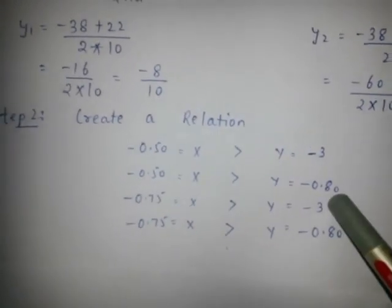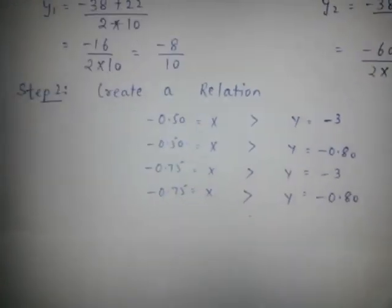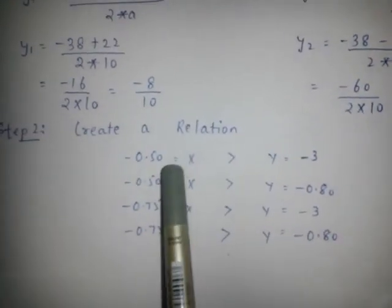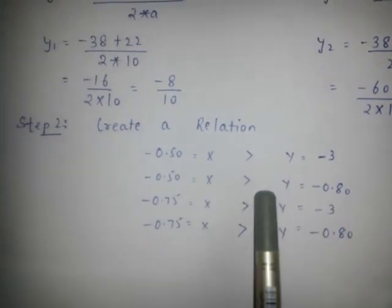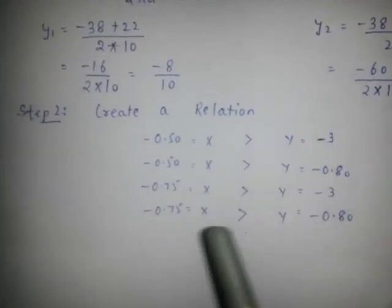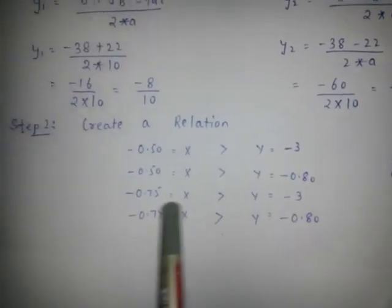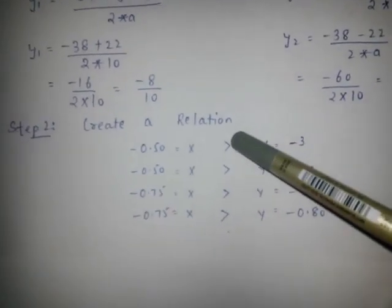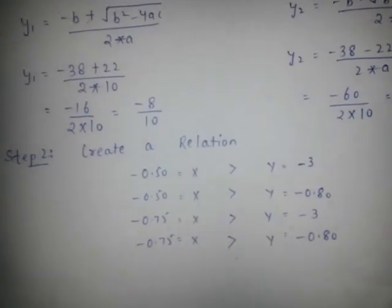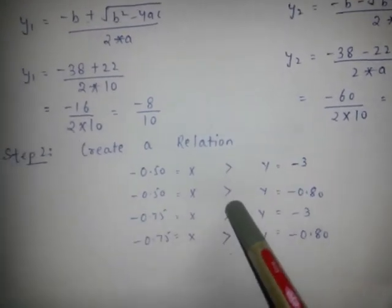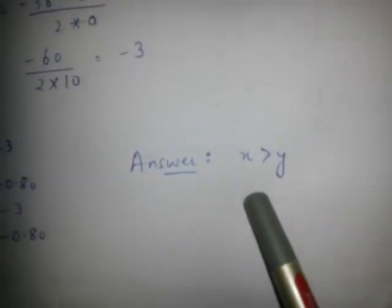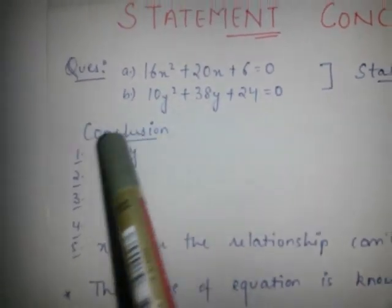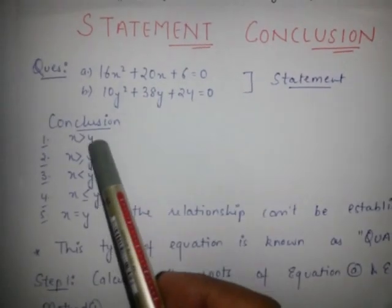These are the corresponding values of Y. For any value of X, we have 2 values of Y, and same for Y. In this case X is greater than Y; in this case also X is greater than Y; and in this case also X is greater than Y. So in all cases the answer should be X greater than Y. Our conclusion answer is X greater than Y.